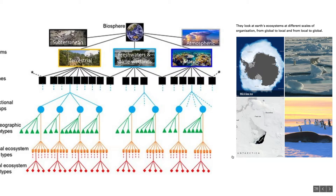The typology combines top-down and bottom-up approaches to look at different scales of organization. For example, sea ice is recognized as a single ecosystem functional group with a global distribution, but there are regional differences in phenology and structure, and the megafauna component in the north and south poles are completely different. These differences can be allocated in the lower levels of the typology.